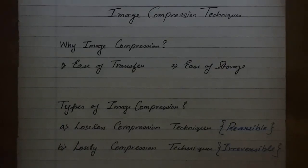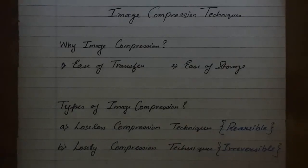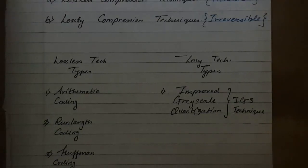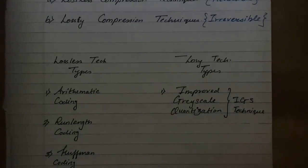We will be seeing the different types of lossless and lossy compression techniques in the upcoming videos with the help of numerical examples. Under lossless techniques we have arithmetic coding, run length coding, and Huffman coding. In lossy techniques we have one important type called IGS coding, which is the improved grayscale quantization technique. In the upcoming tutorials we will see what these techniques are in detail with the help of a numeric example.